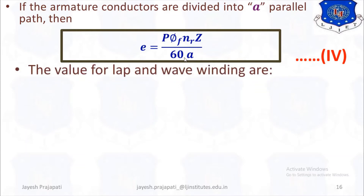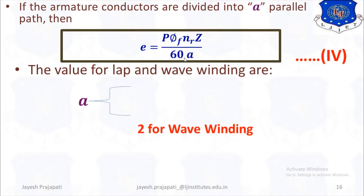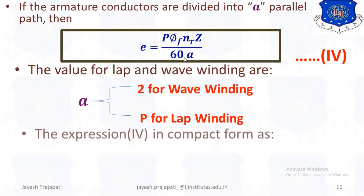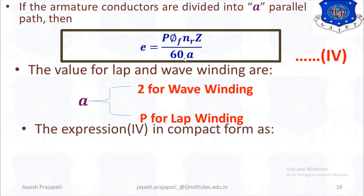In a DC motor there are two types of winding: lap winding and wave winding. The number of parallel paths A equals 2 for wave winding, and A equals P for lap winding.